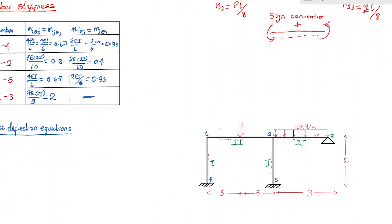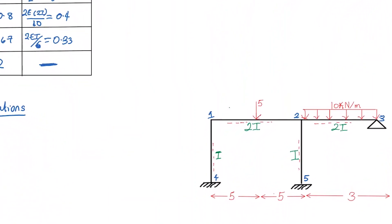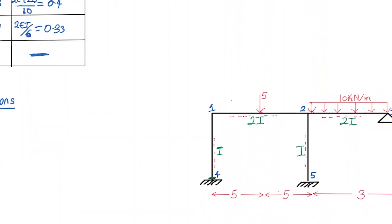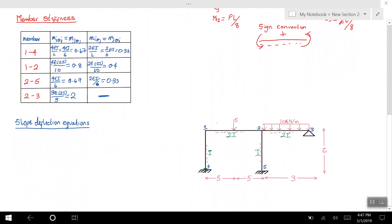The next step is to write out the slope deflection equations. In my opinion, writing out the slope deflection equations makes things much easier. First, I'm going to write the slope deflection equations for this section here, which is called m41. For member 41, do I have any external loads? No, I don't have any external forces, so my fixed end moments for this member is 0.